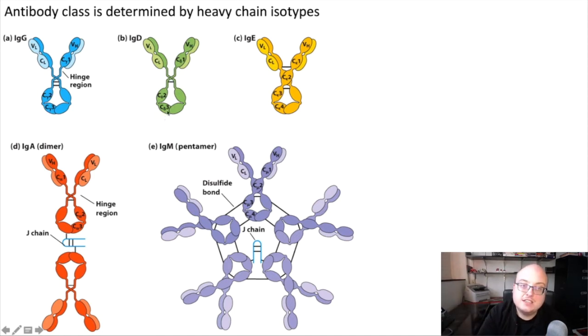We can see here for IgD, we have delta, IgE, we have epsilon, IgA, we have alpha, and IgM, we have mu.